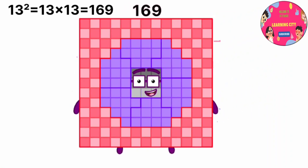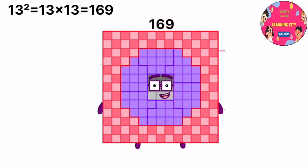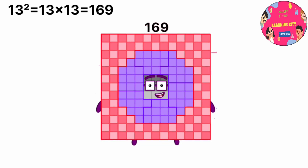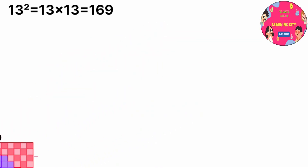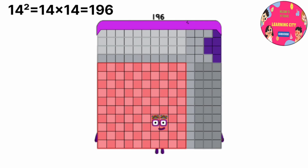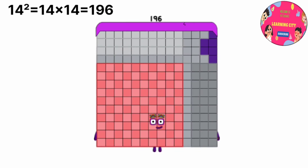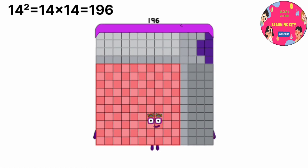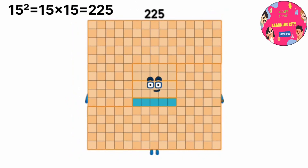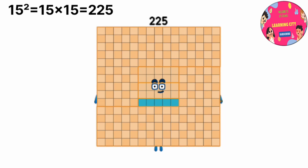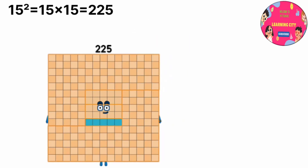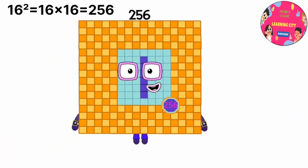13 power 2 equals 169, or 13 multiply by 13 equals 169. 14 power 2 equals 196, or 14 multiply by 14 equals 196. 15 power 2 equals 225, or 15 multiply by 15 equals 225.